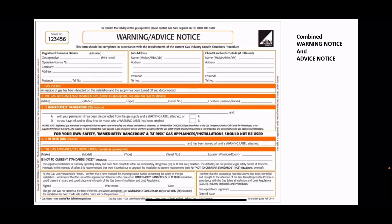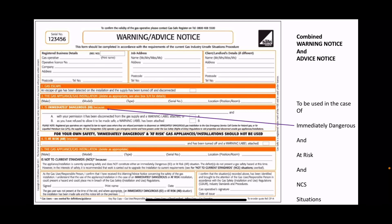This is what a warning or advice notice looks like - this is a Gas Safe one. You've got your immediately dangerous section at the top, your at-risk section below it, and your not-to-current-standards section below that. You just fill in the appropriate section.